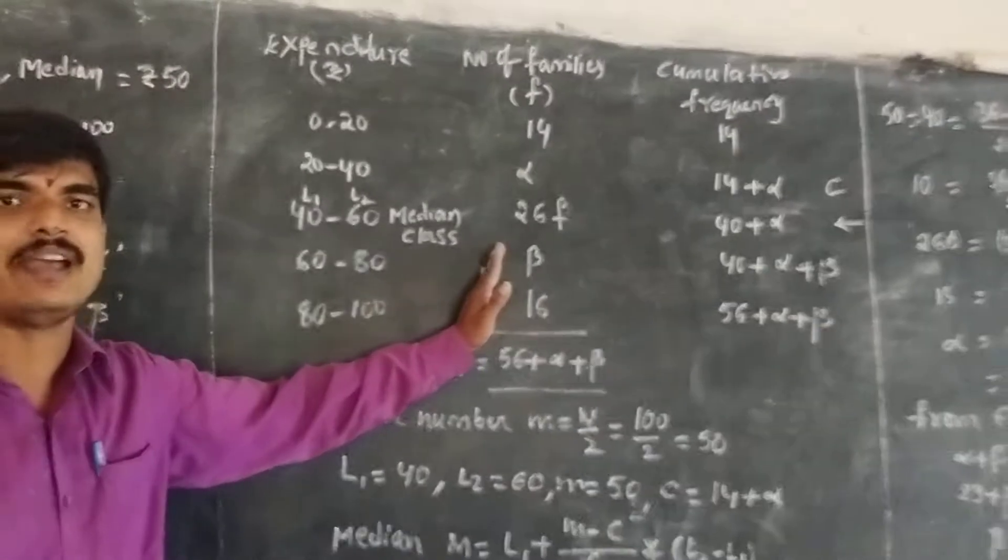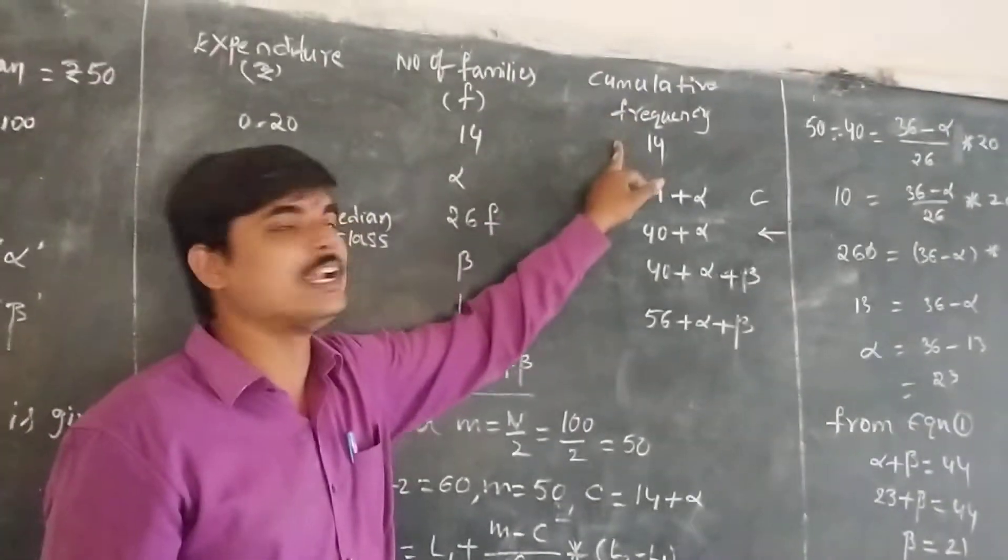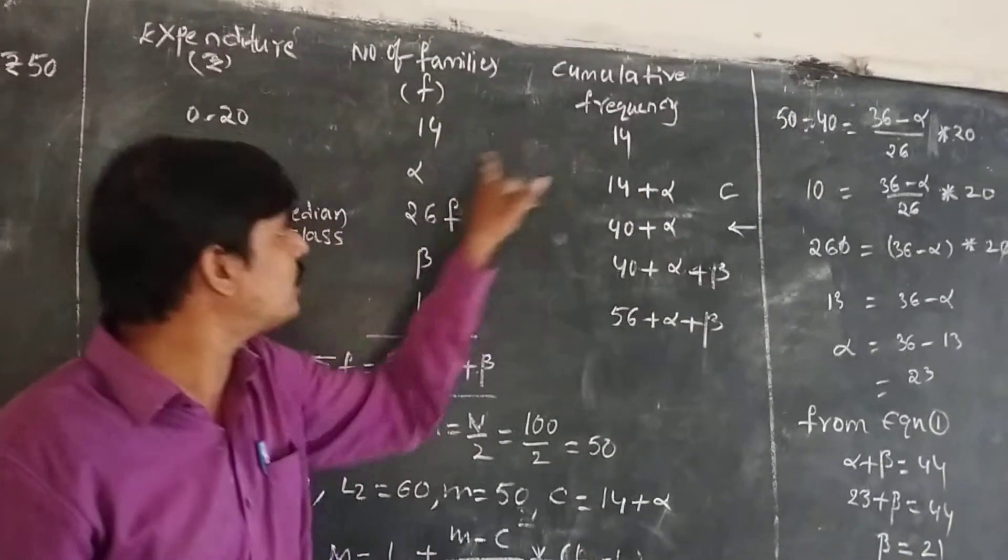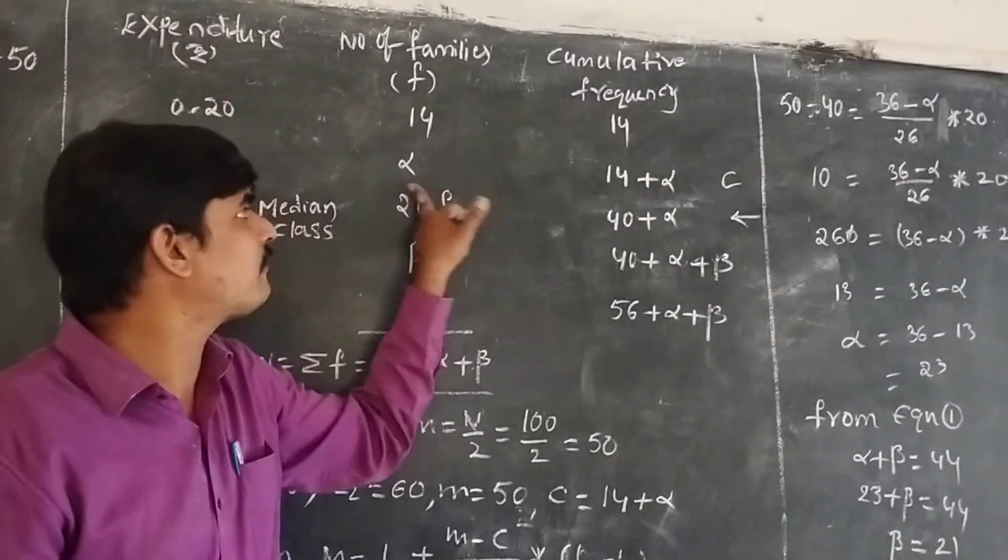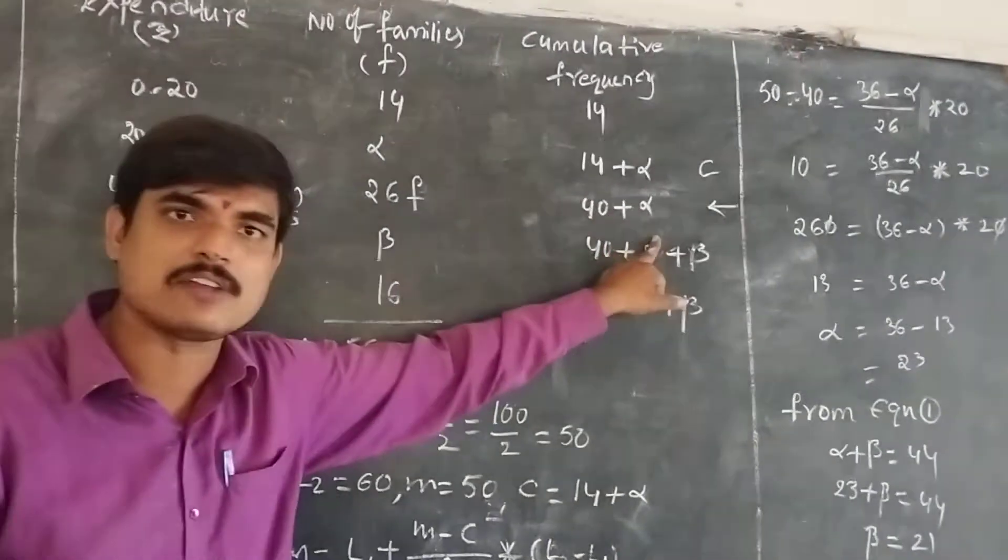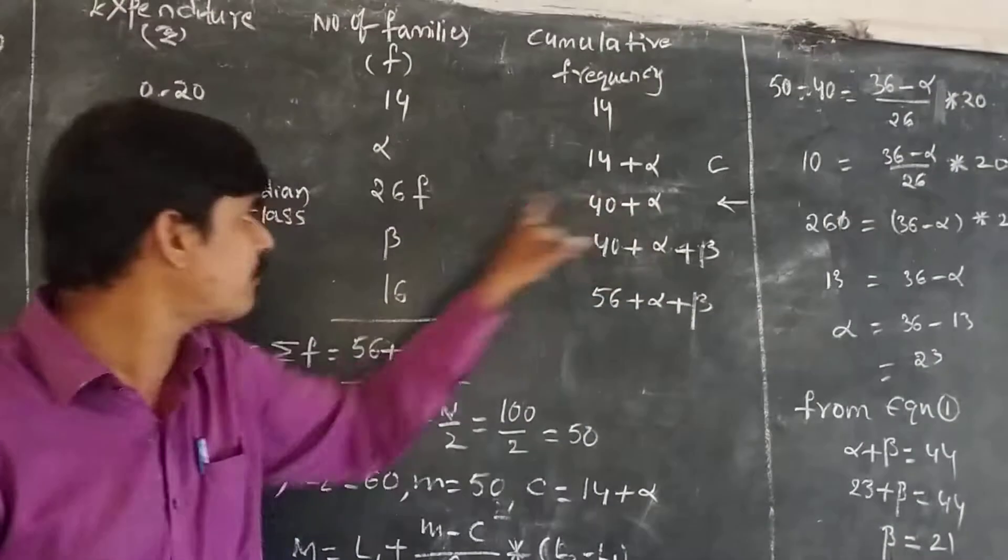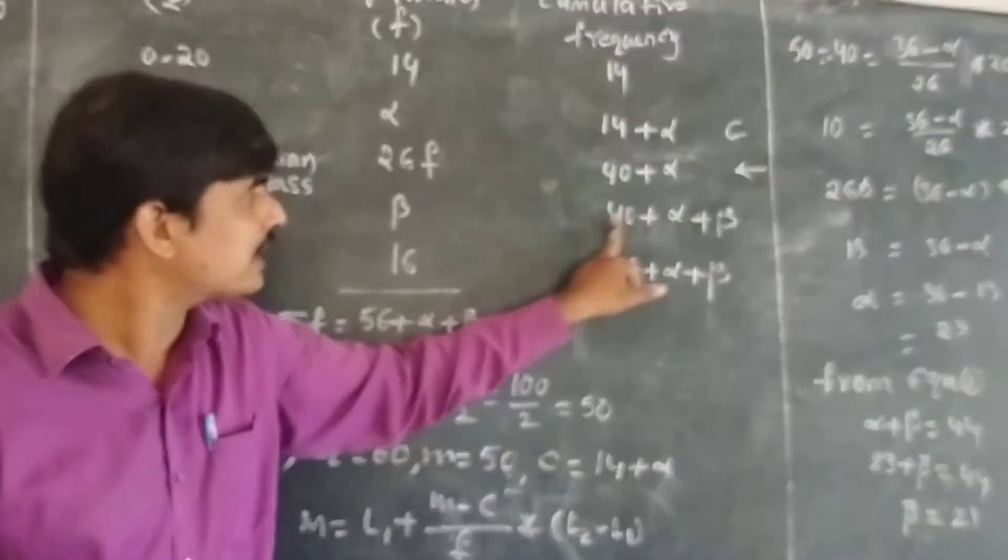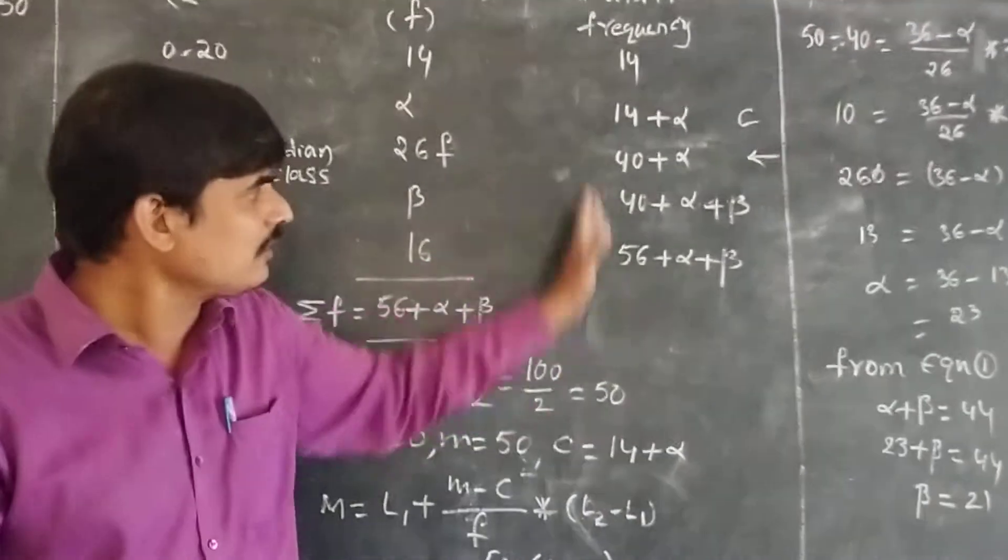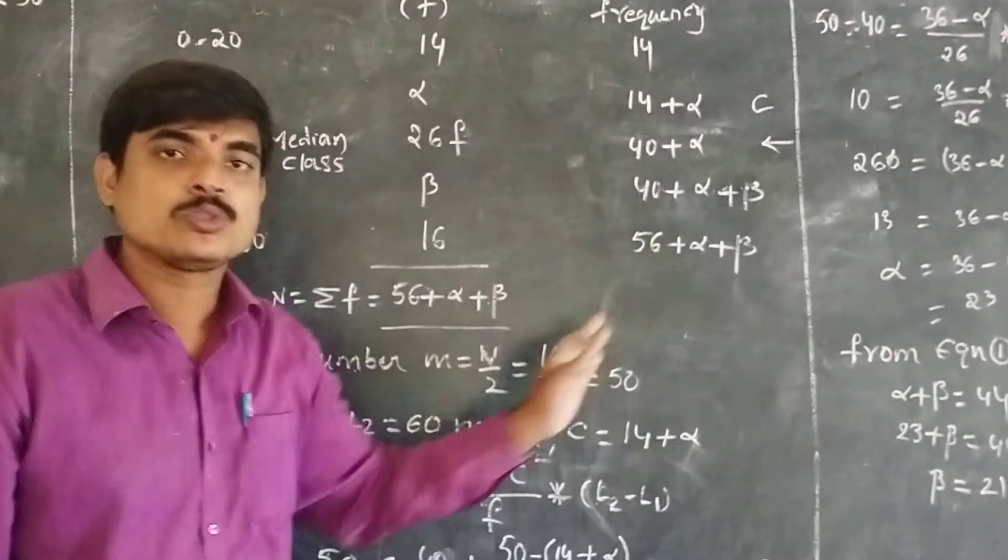Using these frequency values, calculate the cumulative frequency. The first value is 14. Add this value to get 14 plus alpha. The second value: 14 plus alpha plus 26, that is 40 plus alpha. Third value: 40 plus alpha plus beta.